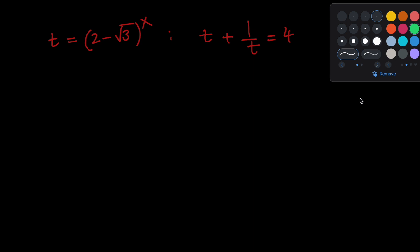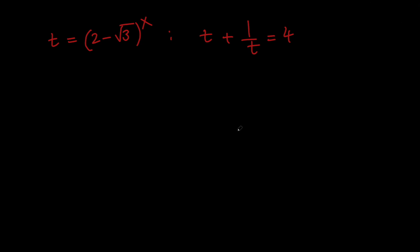Now, in order to solve this for t, let's go ahead and multiply both sides by t. So we're going to get t squared plus 1 equals 4t. If we subtract 4t from both sides, we get t squared minus 4t plus 1 equals 0.